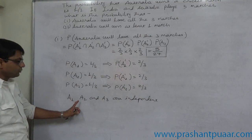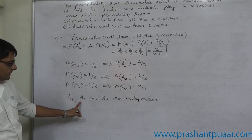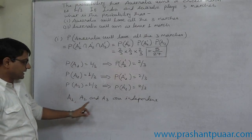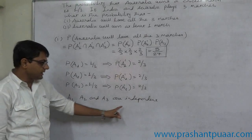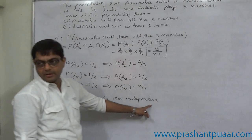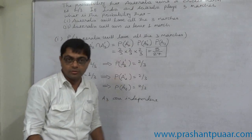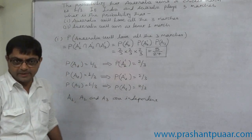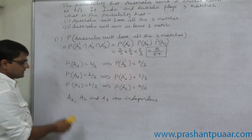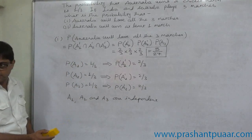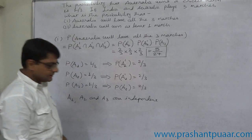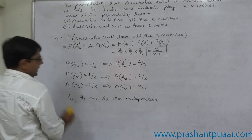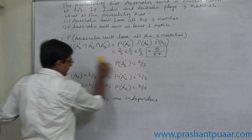We have to understand that A1, A2, and A3 are independent on our own — we cannot expect this to be written in the question. This is a matter of our understanding.